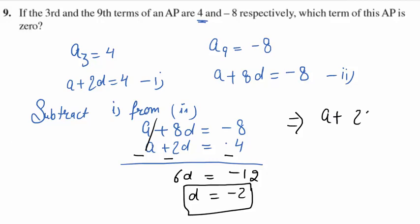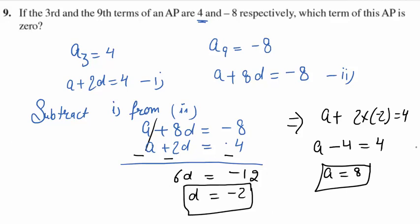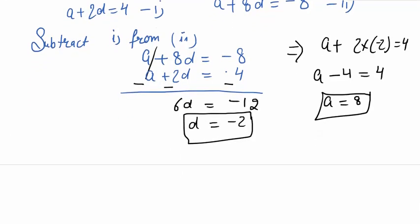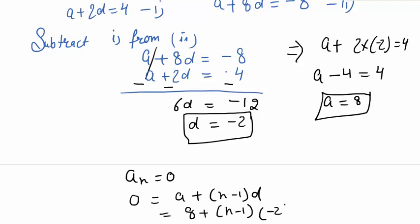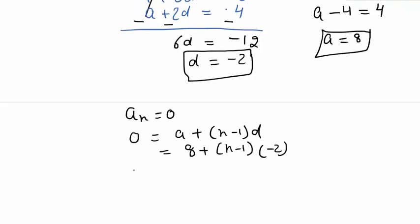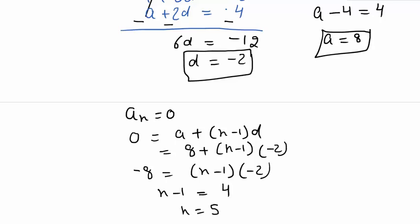Substituting d equals minus 2 into equation 1: a plus 2 times minus 2 equals 4, giving a minus 4 equals 4, so a equals 8. The first term is 8 and common difference is minus 2. Now to find which term equals 0: 0 equals 8 plus n minus 1 into minus 2, giving minus 8 equals n minus 1 into minus 2, so n minus 1 equals 4 and n equals 5. The 5th term of this AP is 0.